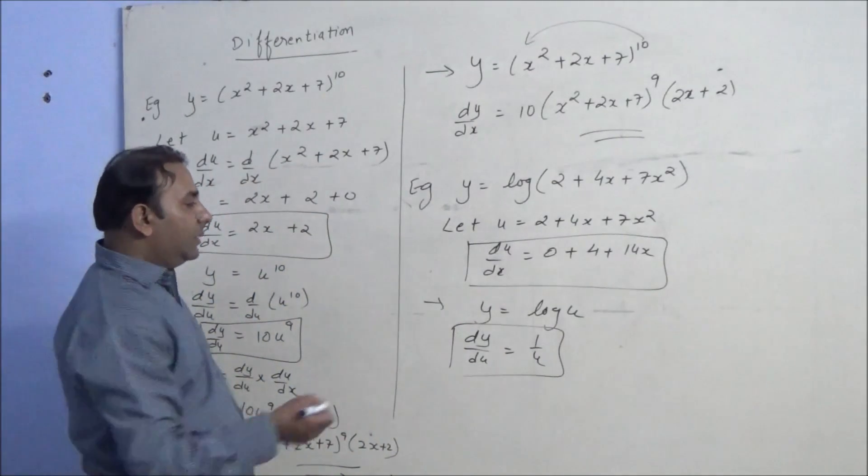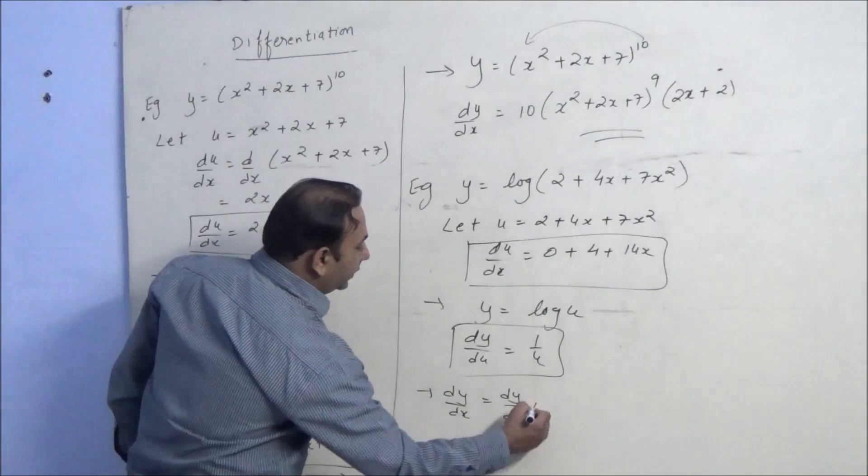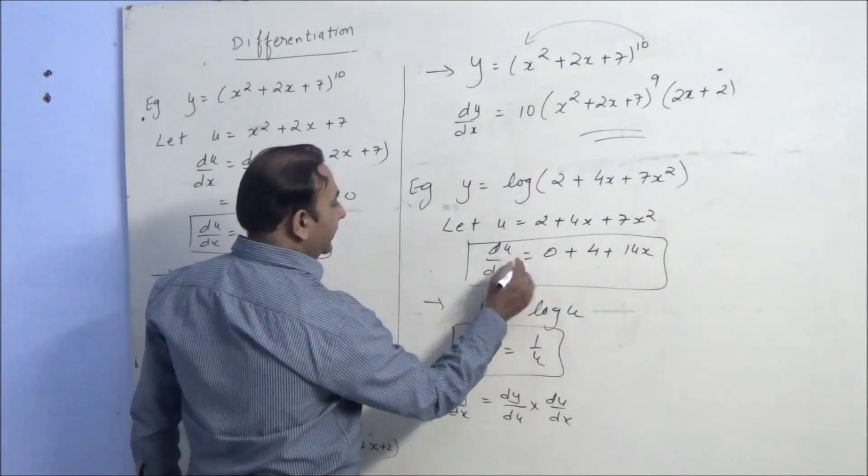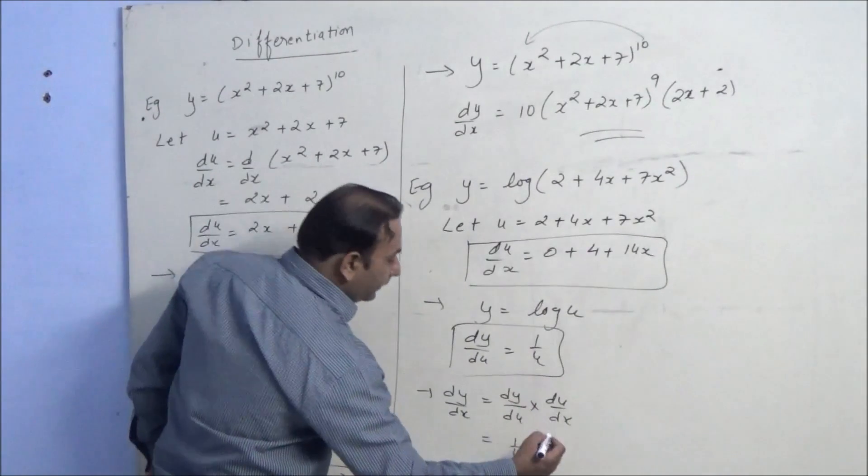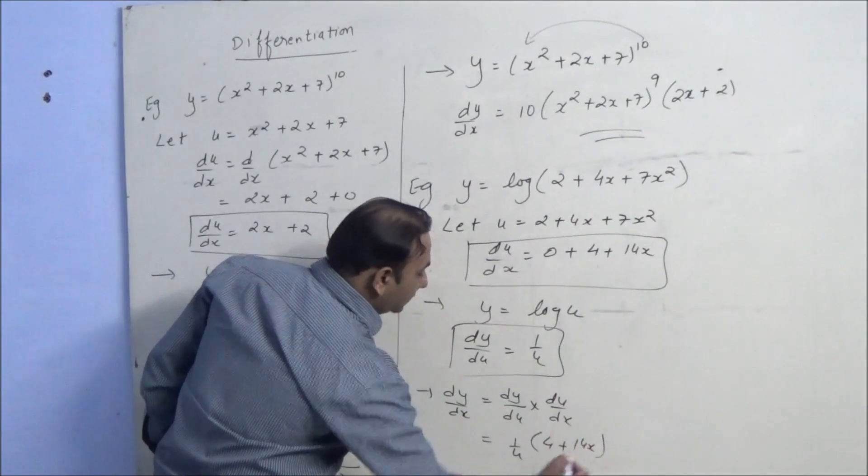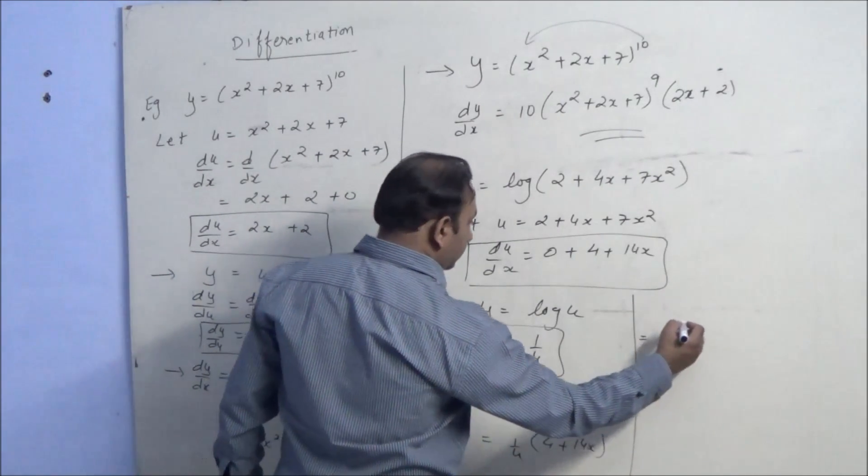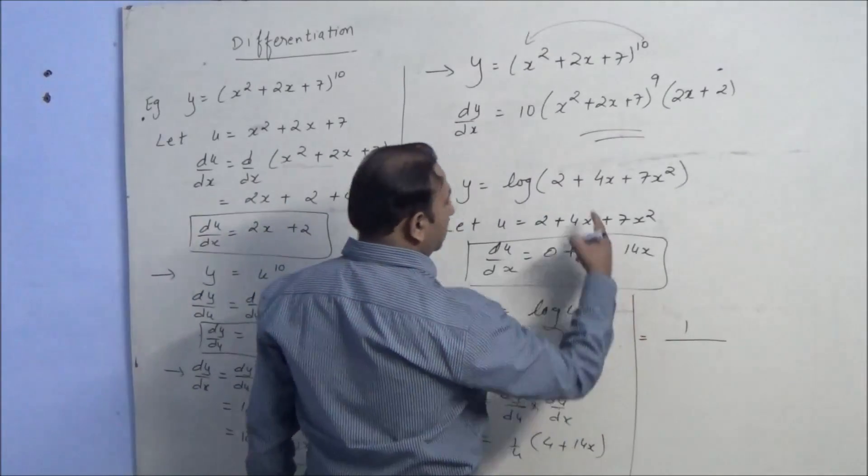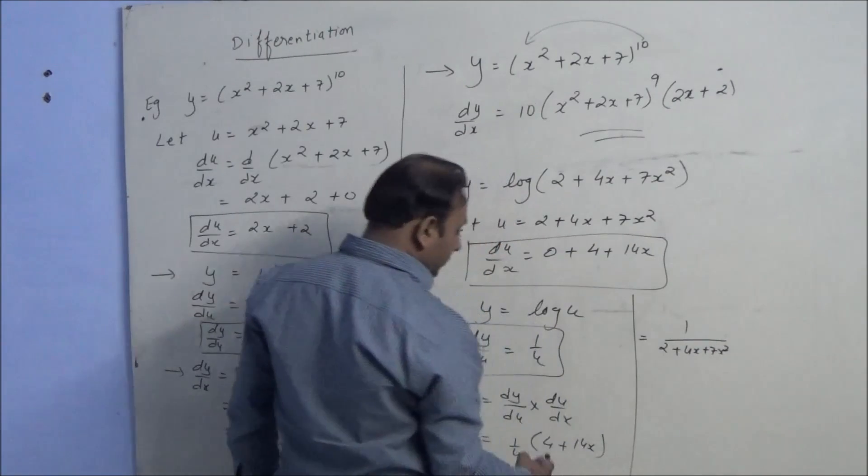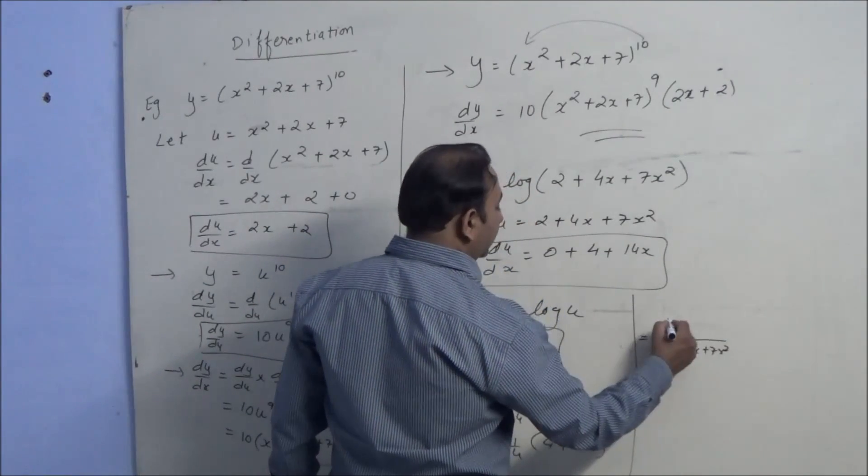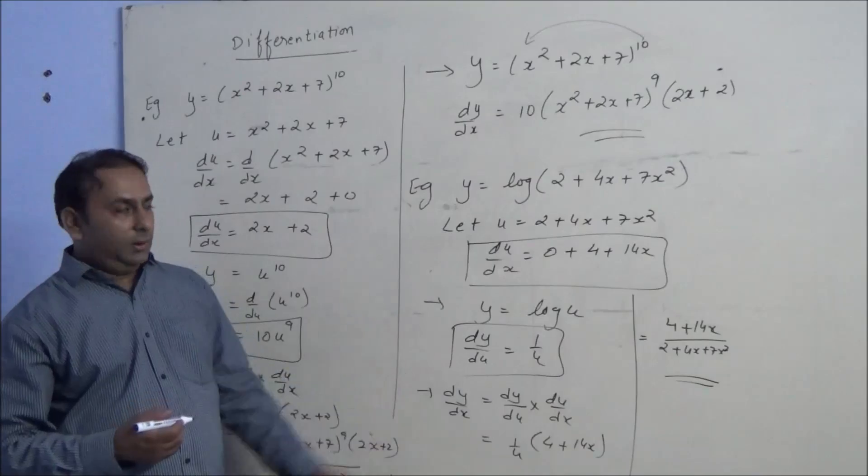So dy by du is 1 by u. Again putting that in the formula, dy by dx equals dy by du into du by dx. So dy by du is 1 by u and du by dx is 4 plus 14x. We can substitute the value of u over here. We can have 1 upon u is 2 plus 4x plus 7x squared into 4 plus 14x, or we can write in numerator as well: 4 plus 14x over 2 plus 4x plus 7x squared. In this way we will get the derivative by chain rule.